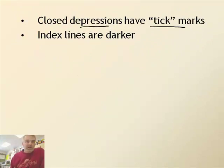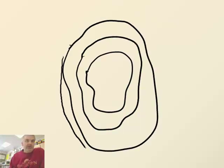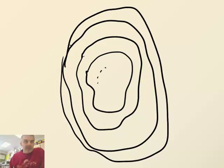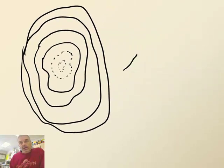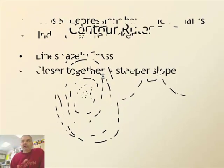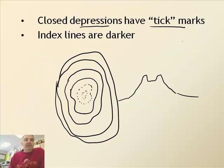If you have a hole in the ground or a closed depression, these are marked with tick marks. Let me draw a contour map of a volcano — with a caldera in the center that is a depression. Notice the tick marks. The picture of that volcano would show the depression going downward. That's how you deal with depressions or holes in the ground — use tick marks.